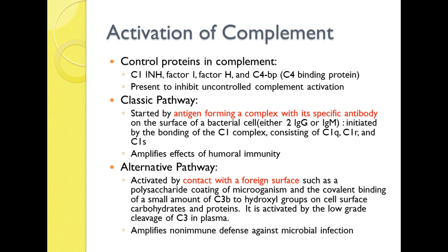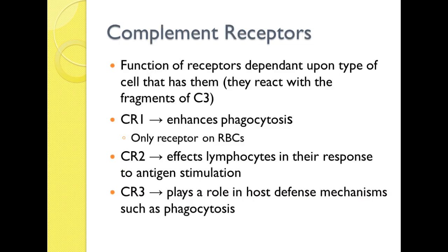The alternative pathway is activated by contact with a foreign surface, such as a polysaccharide coating of a microorganism, and the covalent bonding of a small amount of C3B to hydroxyl groups on a cell surface. In essence, the alternative pathway can just be started by contact with a foreign surface — it doesn't have to have an antibody combined to it. The mannose binding lectin pathway we'll get to a little bit later.